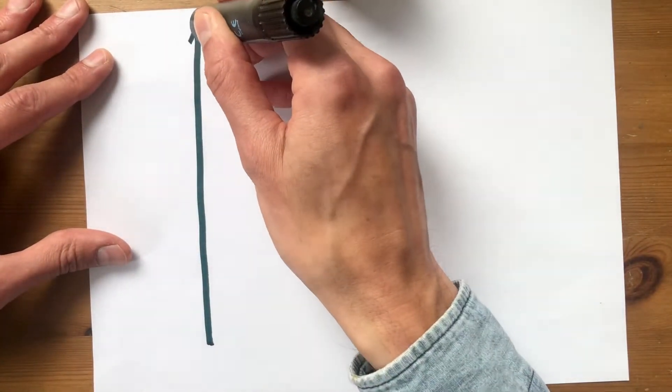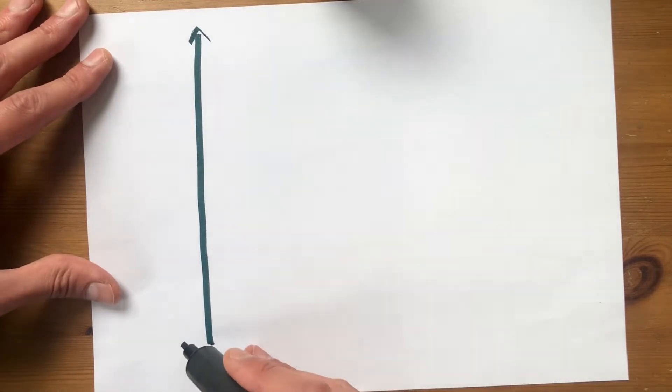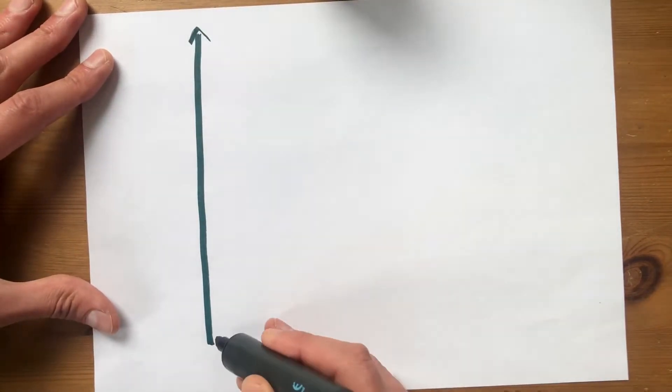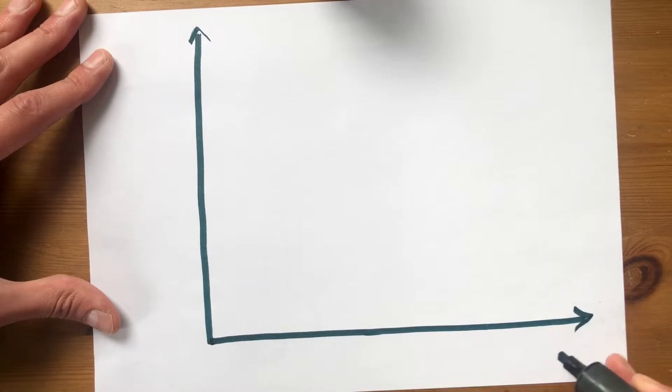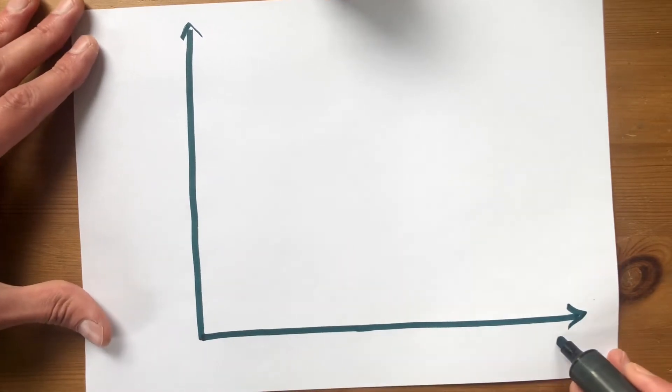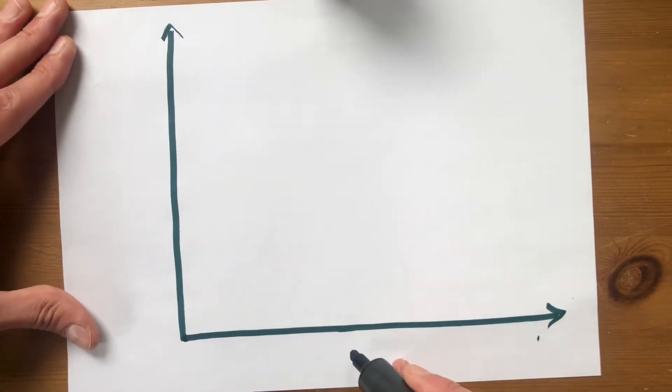It's going to be a simple graph. On this axis we have impedance, low impedance, high impedance. On this axis we have frequency, low frequencies to high frequencies. So this corresponds to bass, middle and treble.